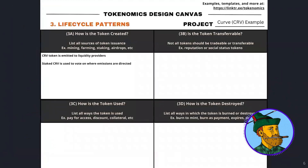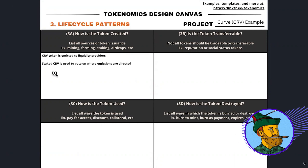We have our lifecycle patterns worksheet here, continuing with the Curve CRV token example. The first thing we want to answer is how the token is created. In Curve's case, CRV is emitted to liquidity providers on a constant, predetermined schedule — the rate does decline over time, but it's a predetermined per-unit-of-time schedule. You stake CRV to vote on where those emissions are directed, so the total amount emitted is pre-known, but where emissions are directed in a given period is decided by governance vote.